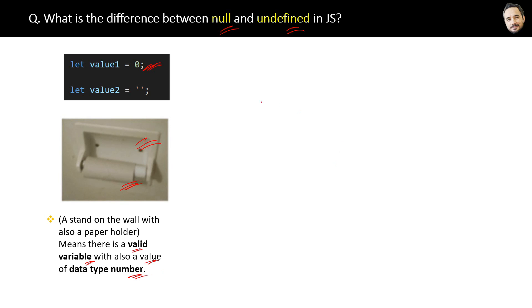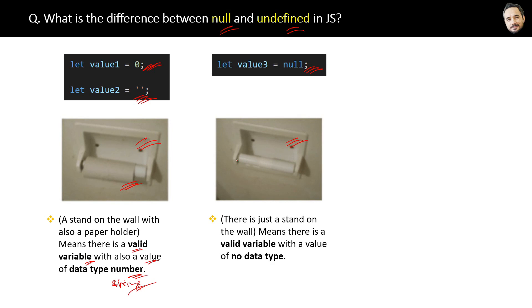If the value is empty, then it means it is a string data type. But if the variable is assigned a null, that means there is just a stand on the wall with no holder, means there is a valid variable with a value of no data type.